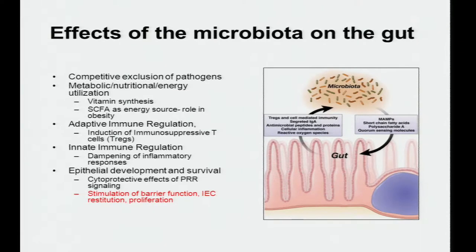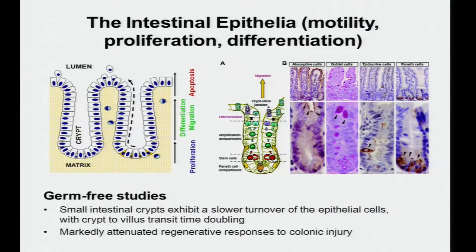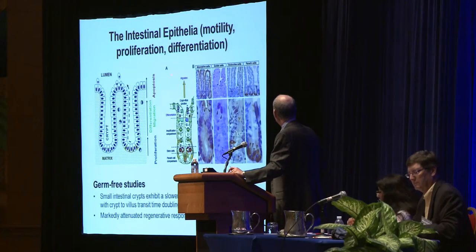The area I want to touch on today is epithelial development and survival. There are cytoprotective effects of signaling—Gene Chang talked about the heat shock proteins. What I want to talk about is stimulation of barrier function and IEC—intestinal epithelial cell—restitution and proliferation. As basic background, the epithelia in mammals is three-dimensional, with crypts containing stem cells proliferating up to a transient amplifying compartment, where they undergo differentiation and ultimately are shed through an apoptotic process.